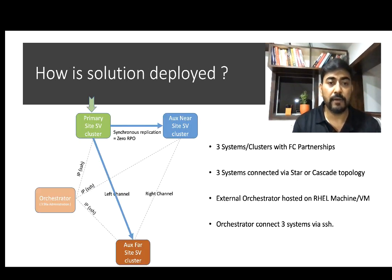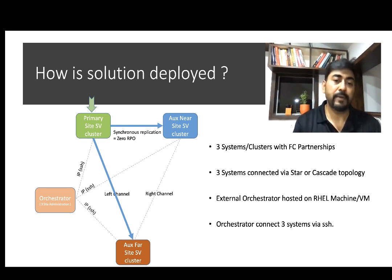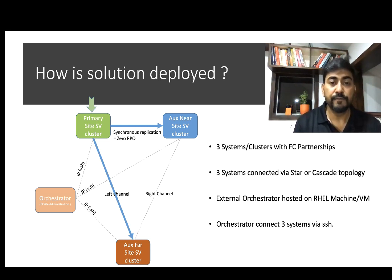Now let's look at how the solution is deployed. There are three sites — primary, aux-near, and aux-far — each having a Spectrum Virtualize cluster. The link between the primary site and the aux-near site is used for synchronous data replication and is always an active link. The link between the primary site and the aux-far site is termed the left channel, while the link between the aux-near site and the aux-far site is termed the right channel. At any given point in time, either the left channel or the right channel would be active, while the remaining would be a standby link.